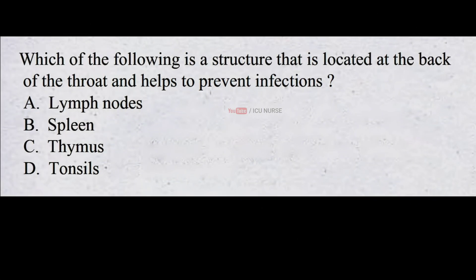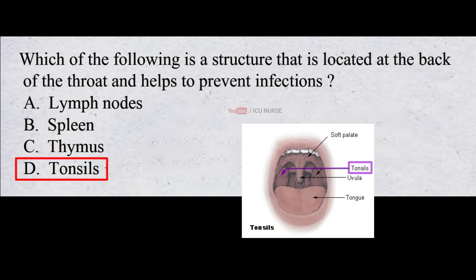Which of the following is the structure that is located at the back of the throat and helps to prevent infections? A. Lymph nodes B. Spleen C. Thymus D. Tonsils. The correct answer is D. Tonsils. Tonsils are located in the back of your throat and are part of your immune system. They help fight infection and disease.